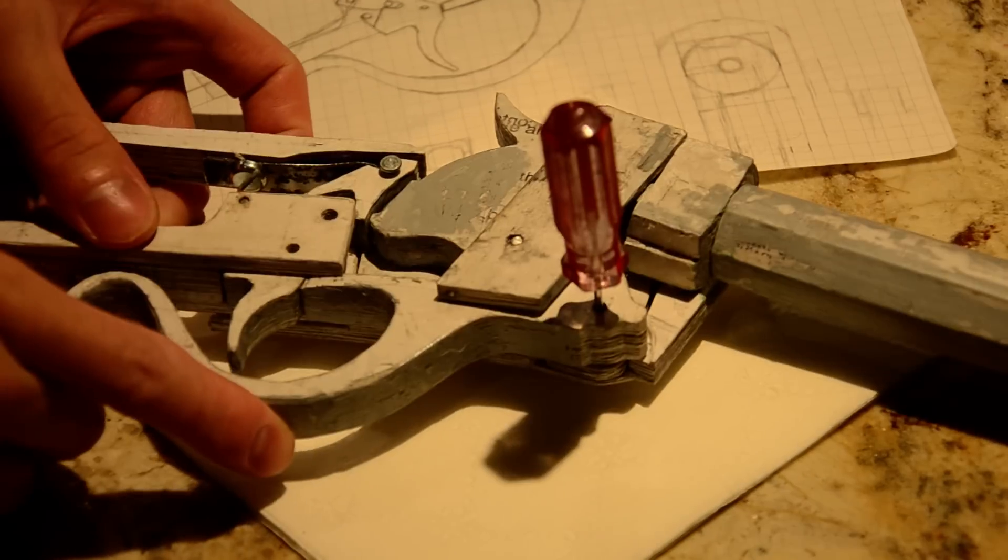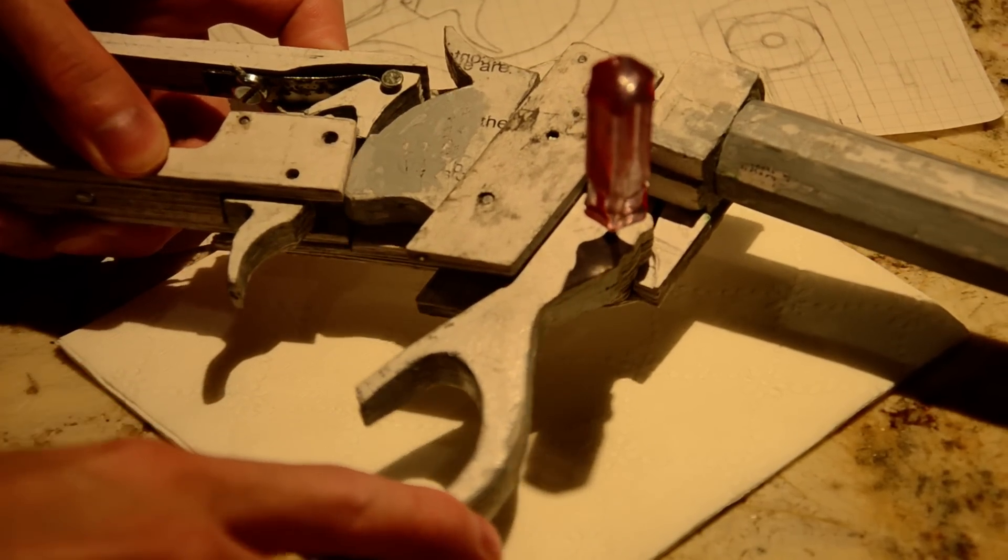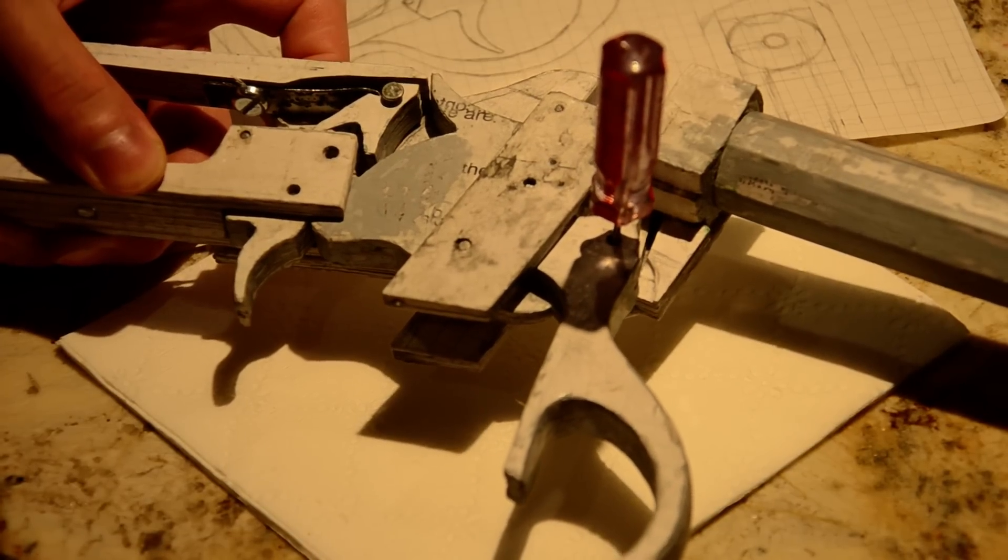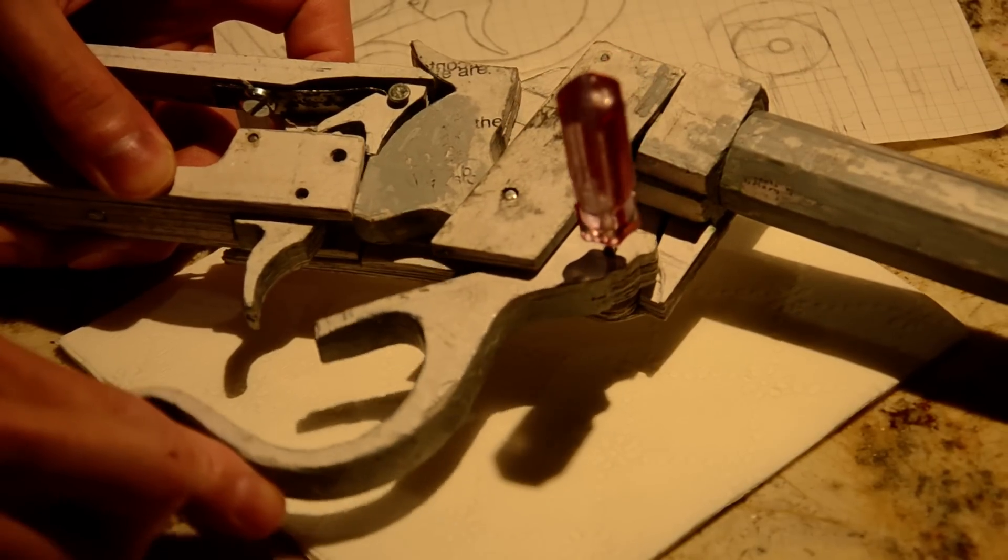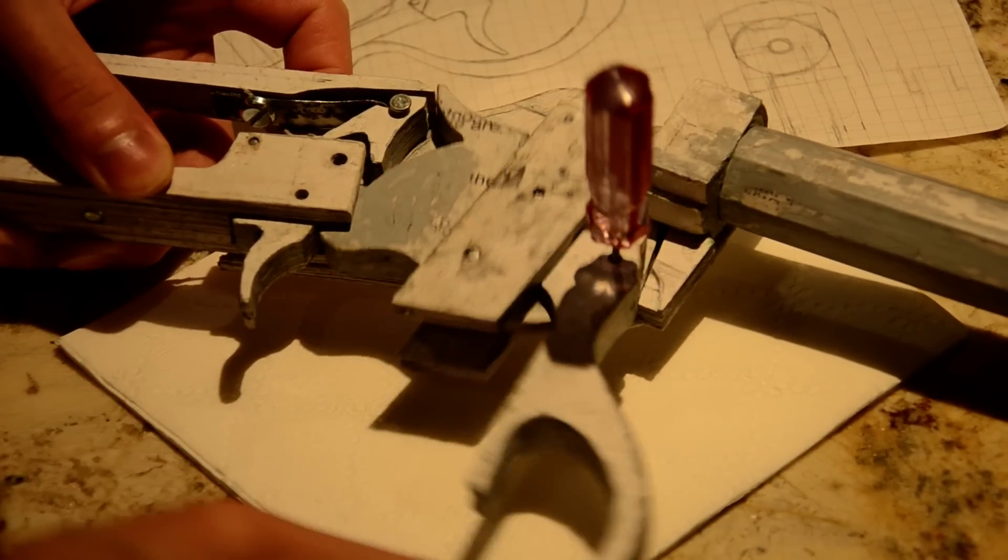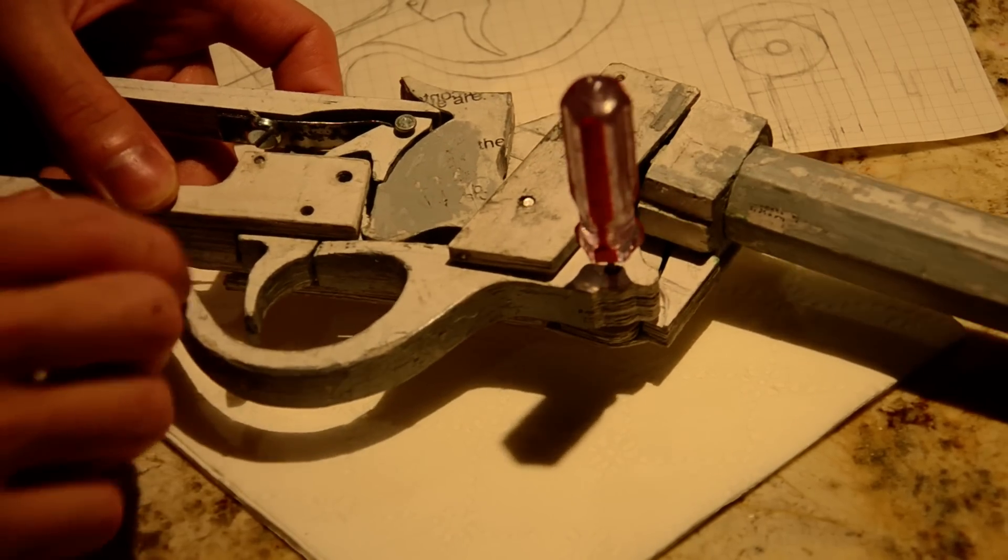And when you open the action, the whole entire hammer and the breech assembly lowers. And when you bring it back up, the hammer automatically cocks by itself. So that's the basic overall function of this area.